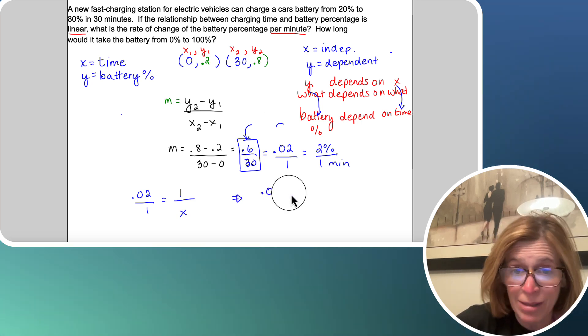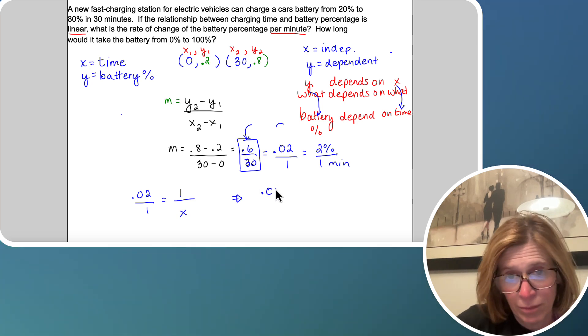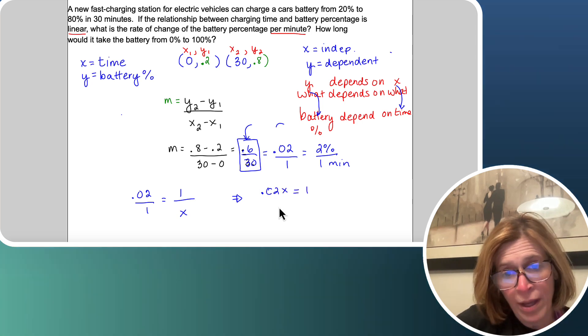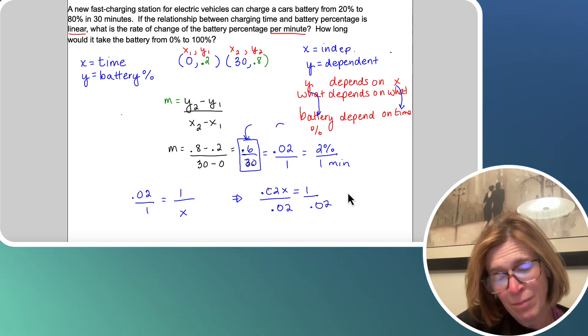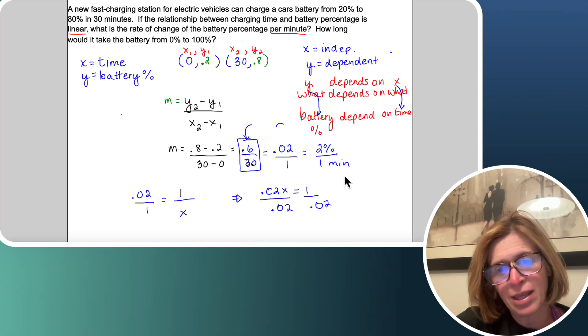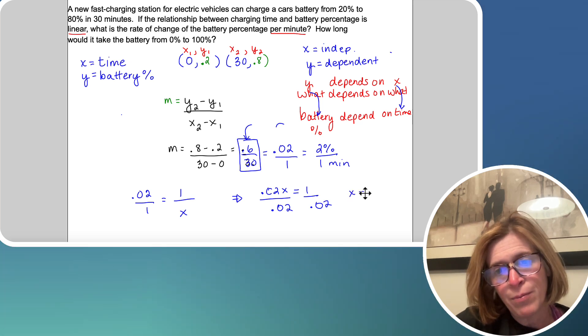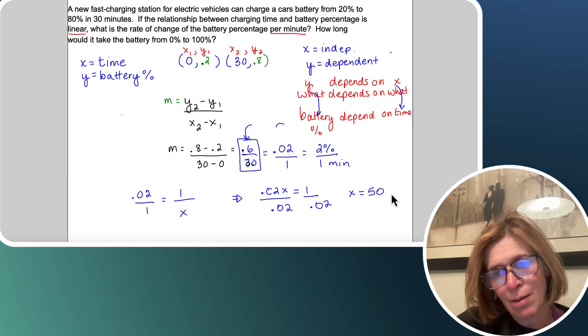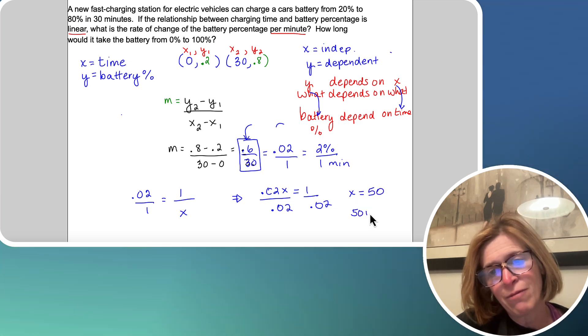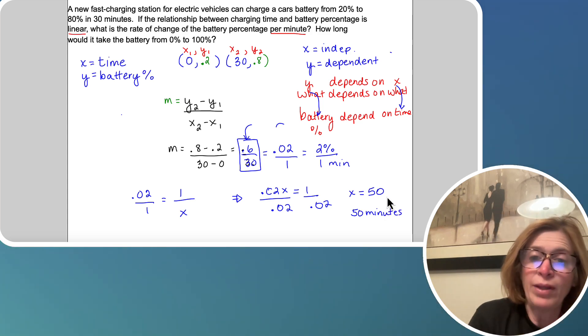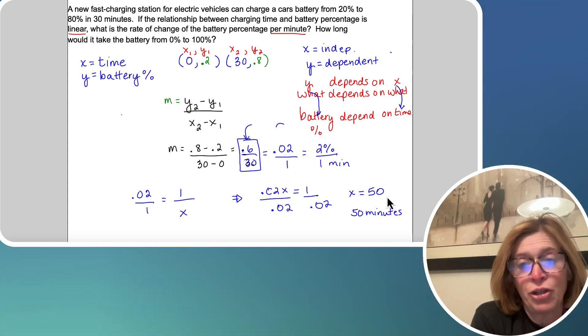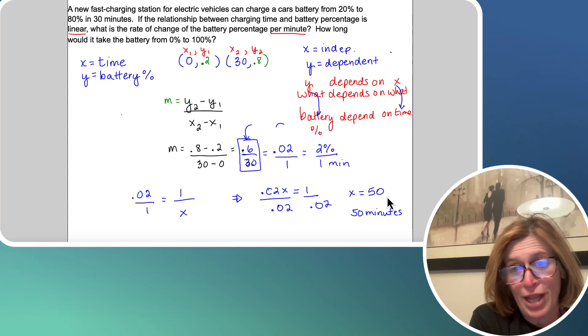equals 1. I can divide by 0.02. And I'm skipping the math here, because that's something I think you should be able to do. But that would be x is 50. 0.02 goes into the number 1 50 times, so it would take approximately 50 minutes to go from 0 to 100%.